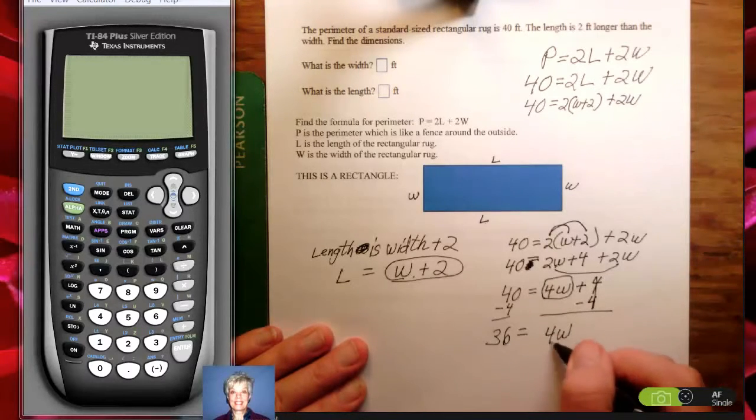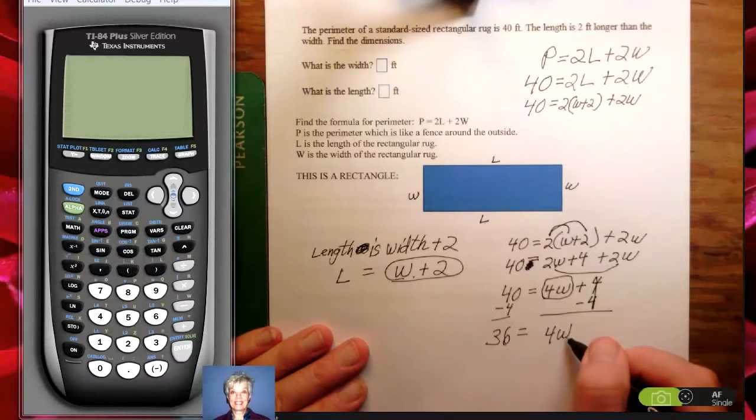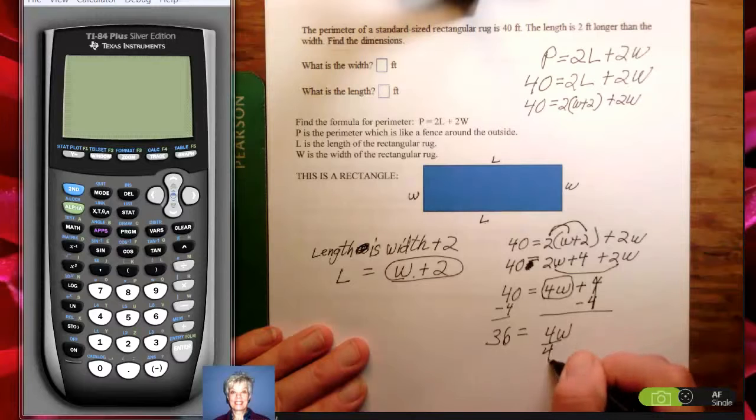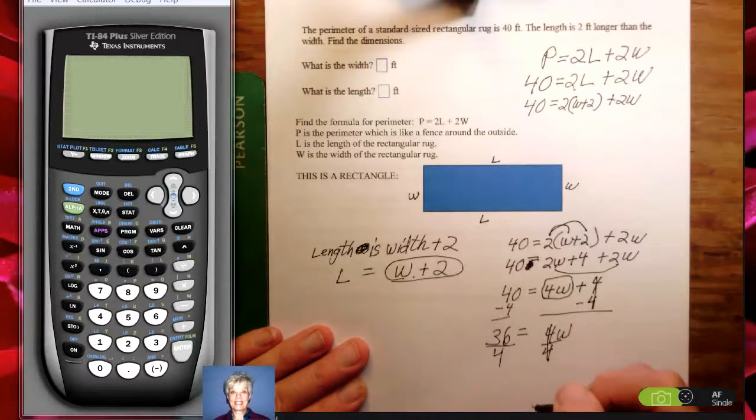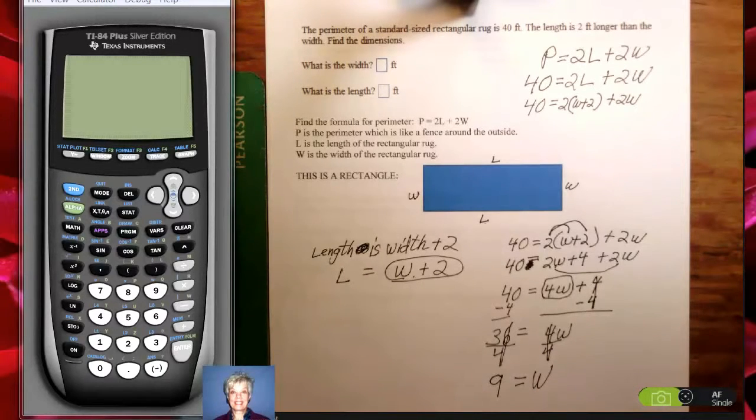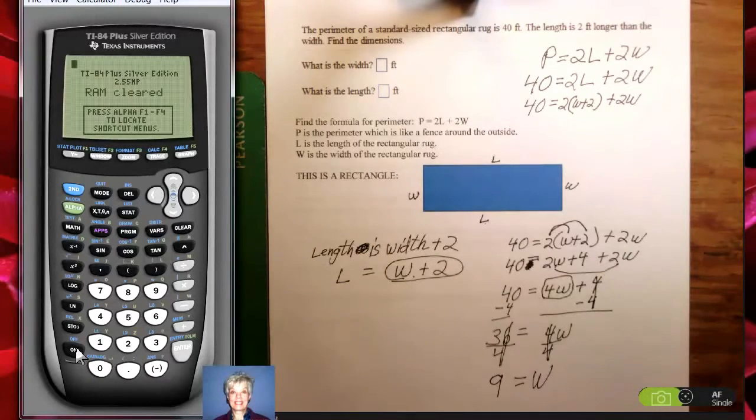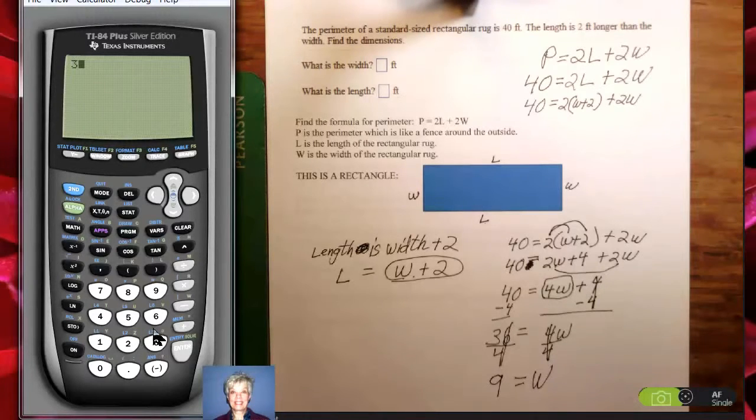To get W by itself, since 4 is being multiplied by W, I am going to divide by 4, by the number in front of the W. Later, you'll find out that number is called the coefficient. 36 divided by 4 is 9. Now, how would you find that out if you didn't know that? If you didn't know that 36 divided by 4 is 9. Simple. Go to your calculator. 36 divided by 4. Enter. There you go. It's 9.